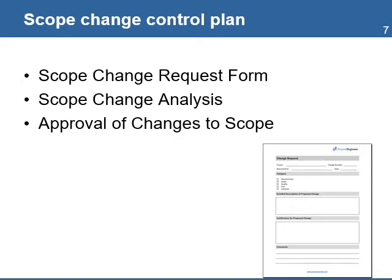The plan includes the actions to analyze the scope change. The analysis is done to determine the impact caused by the change. No change should be included in the Scope Statement or WBS unless an analysis is made and approval is obtained. The project will appoint key stakeholders responsible for approving any changes, which can include the donor. All changes must be approved before any new work begins.